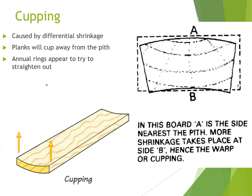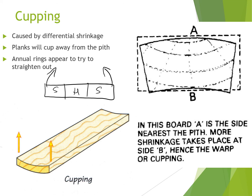Cupping can occur where you have an area of hardwood in the middle and sapwood on the outside. They dry at two different rates during the seasoning process and the board can cup as a result. Ideally, when you cut down the tree, you should try to split the hardwood from the sapwood — that makes the seasoning process easier, which makes the board more stable.